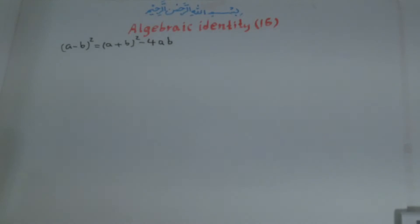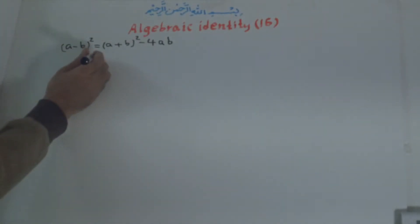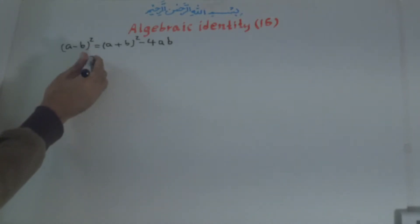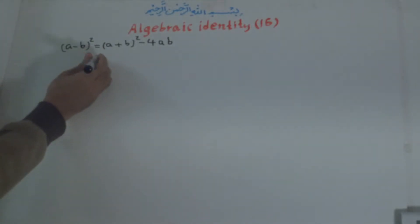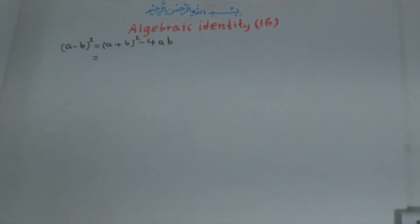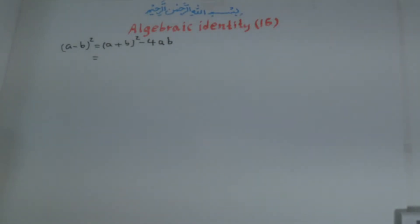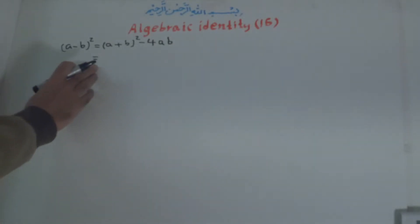To prove this identity, we need to determine whether it is true or false. We will simplify the right side of the identity. If the right side becomes equal to the left side, then the identity is true; otherwise, it is false.